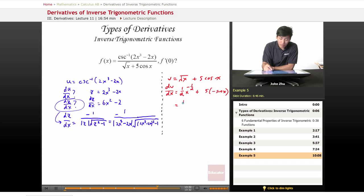So we rewrite this, 1 half x to the negative 1 half minus 5 sine of x. So now that we have these derivatives of the numerator and the denominator, we can go ahead and apply the quotient rule.